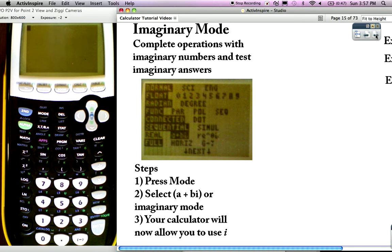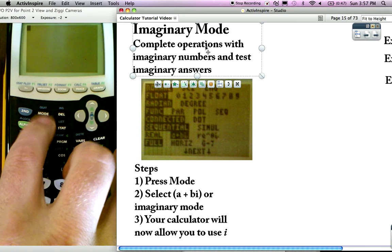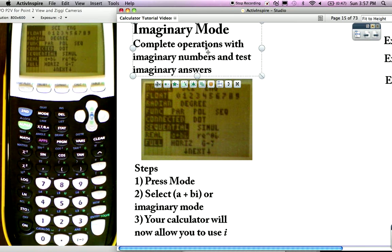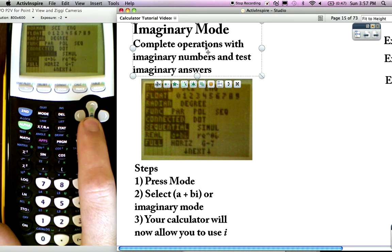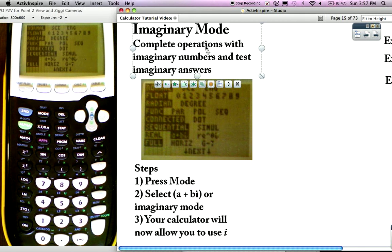The first thing we need to do in order to get imaginary mode on, which allows us to complete operations with imaginary numbers and test imaginary answers, is we want to go into our mode right there. And then we're going to go down. Your default setting is going to be on real numbers.